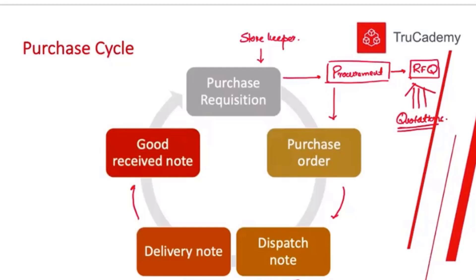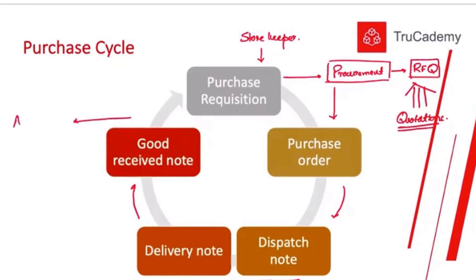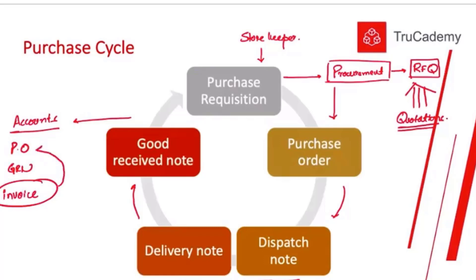Once the goods have been received in the warehouse, the storekeeper informs the accounts department, providing the Goods Received Note. The accounts department will have a copy of the purchase order, keep a copy of the Goods Received Note, and when the invoice arrives from the supplier, they will check it against the purchase order and the Goods Received Note to confirm the order was placed and the goods were actually received.